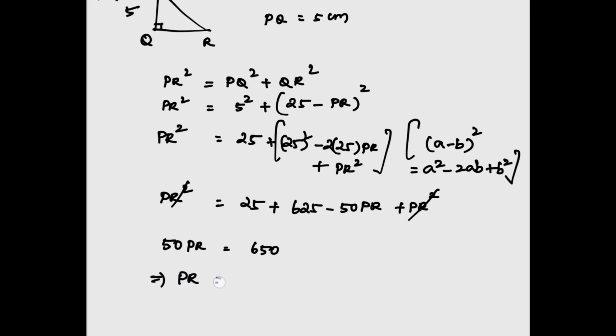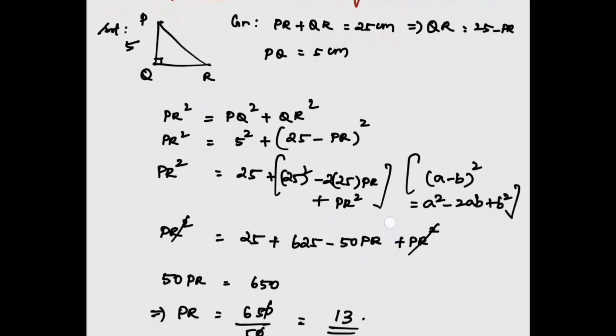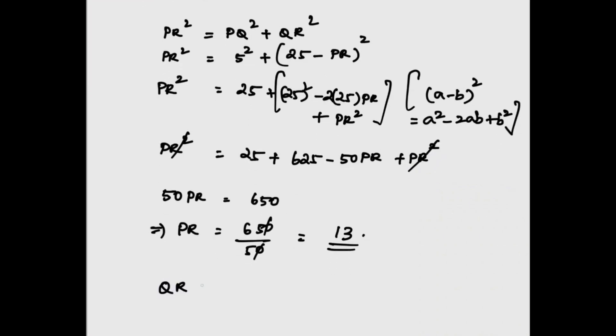PR = 650/50 = 13. So by substituting in QR, QR = 25 - PR = 25 - 13 = 12.